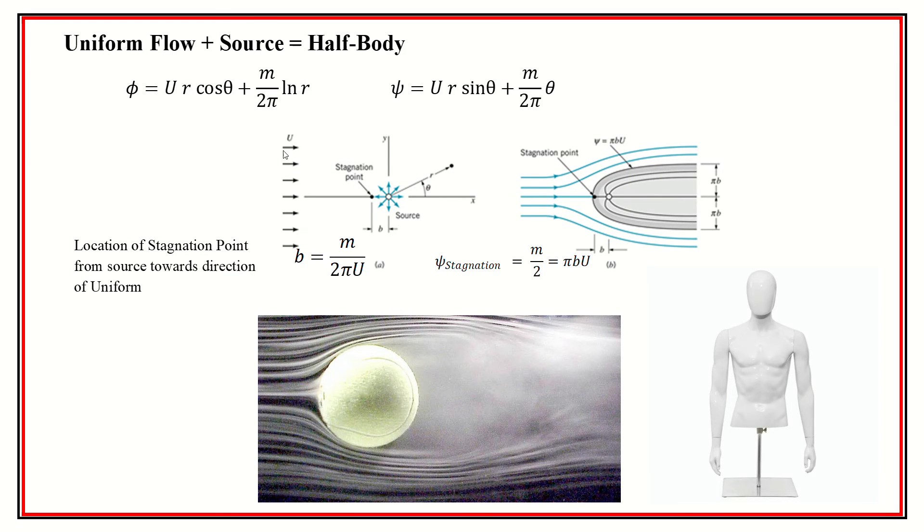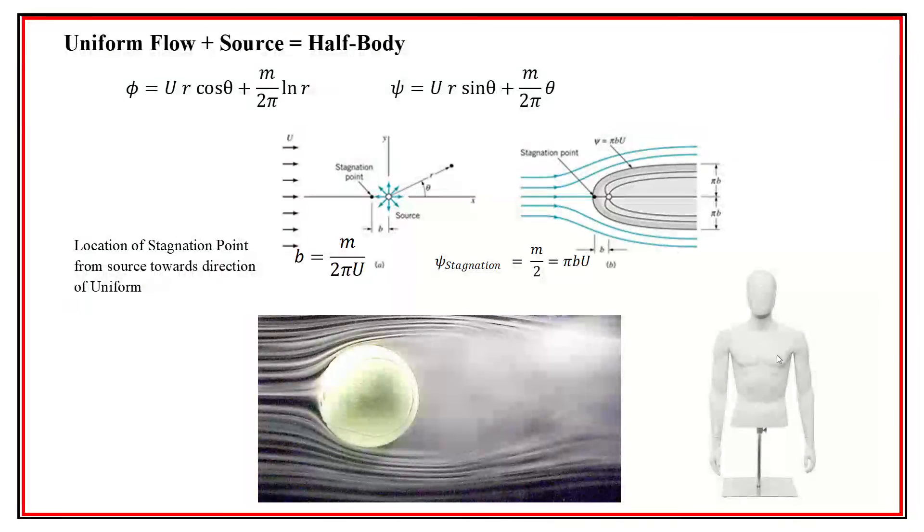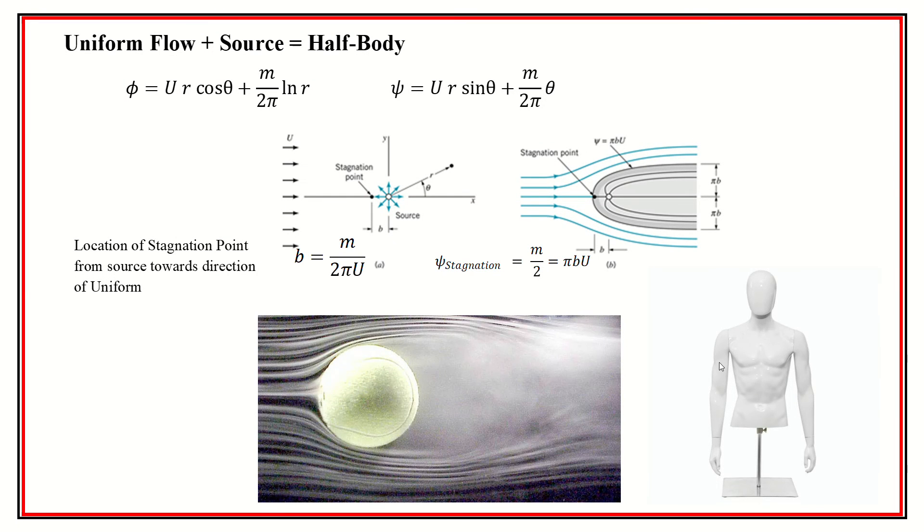And so here's one of our first combos, where we take a uniform and add it with a source. And we can make what's called a half body here. And you can start to see that the streamlines that we've created right there, well, first off, notably, you have a stagnation point, right? Because so the velocity, that's the location where the velocity coming out of the source equals the velocity of the uniform flow. So that makes sense. It's a stagnation point, just like you get a stagnation point right here on the flow of this, looks like it'd be a tennis ball, right? And they call this a half body. And it's funny, because I made a half mannequin right there.